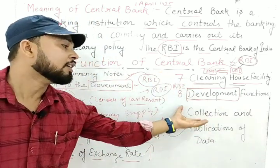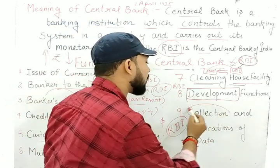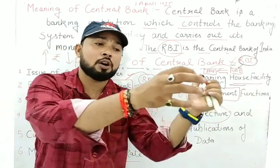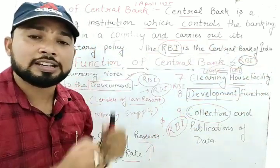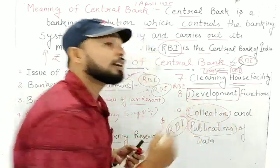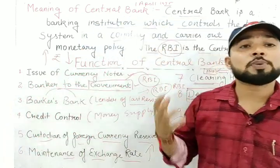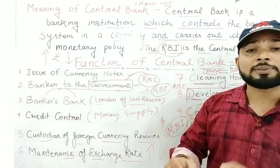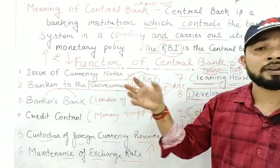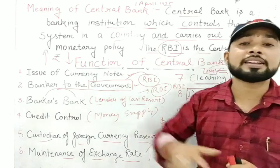The ninth and last function is collection and publication of data. RBI collects information and data from all commercial banks. This data is then published for the public, the international market, and the Indian economy and banking system. RBI also provides training, supervision, and guidelines to commercial bank managers.